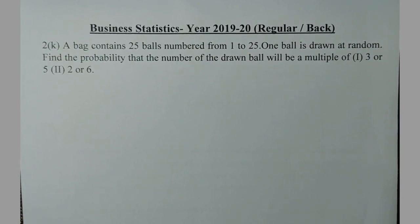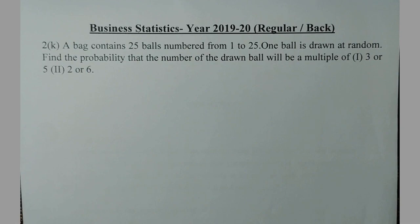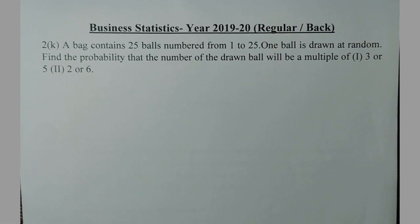Today in business statistics, year 2019-20 regular. Question number 2, case A: A bag contains 25 balls numbered from 1 to 25. One ball is drawn at random. Find the probability that the number on the drawn ball will be a multiple of 3 or 5. The second part is multiple of 2 or 6. So let's solve this today.